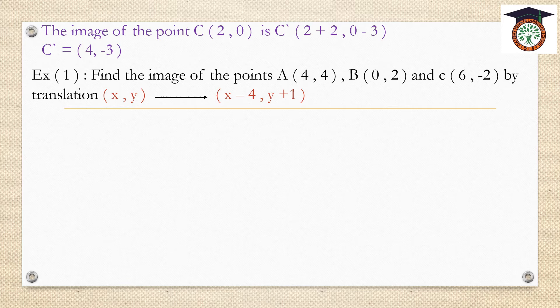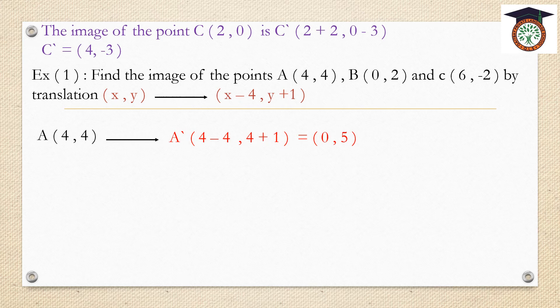Exercise 1: Find the image of the points A(4, 4), B(0, 2), and C(6, -2) by translation with rule (x minus 4, y plus 1). For point A(4, 4): A dash is 4 minus 4 and 4 plus 1. That gives 0 and 5, so A dash is (0, 5).